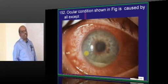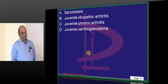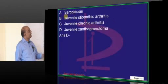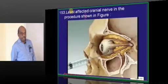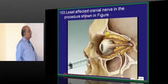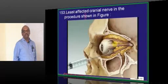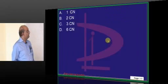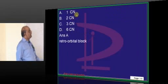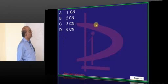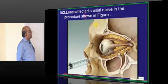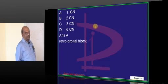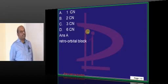The ocular condition shown is uveitis with hypopyon. Uveitis can be a feature of juvenile idiopathic arthritis and sarcoidosis. The technique shown is a retrobulbar block, which can lead to injury of cranial nerves II and VI.